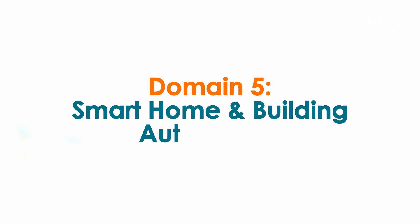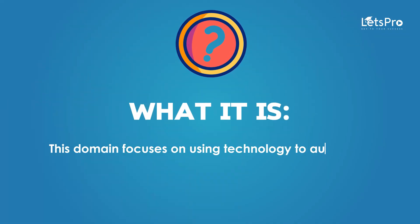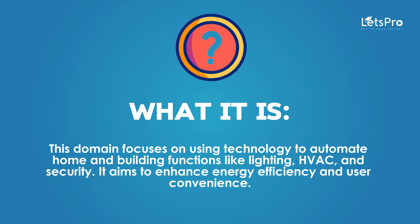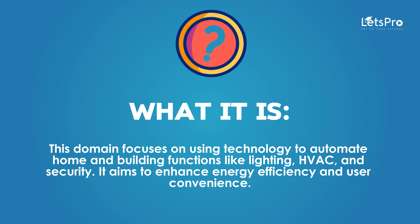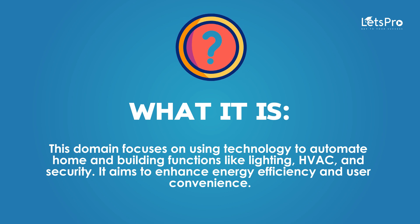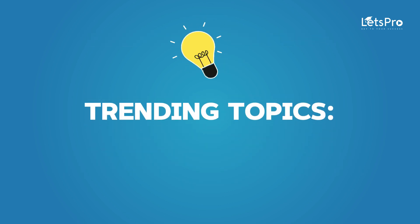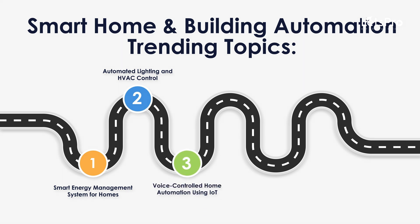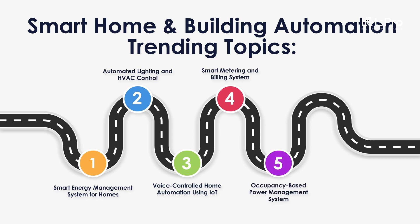Domain 5: Smart Home and Building Automation. This domain focuses on using technology to automate home and building functions like lighting, HVAC and security. It aims to enhance energy efficiency and user convenience. Trending Topics: Smart Energy Management System for Homes, Automated Lighting and HVAC Control, Voice Controlled Home Automation using IoT, Smart Metering and Building System, Occupancy Based Power Management System.